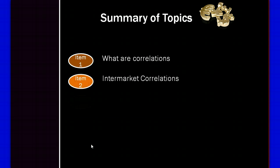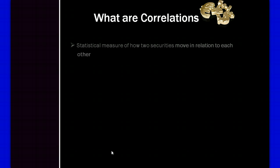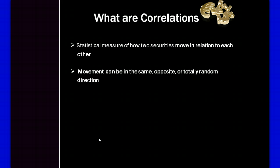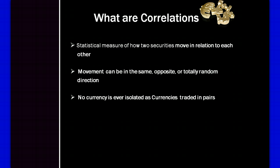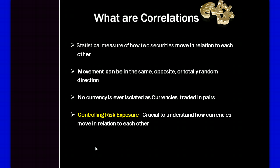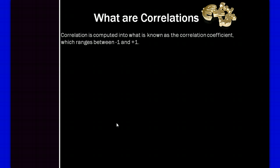What are correlations? Essentially, they are a statistical measure of how two securities move in relation to each other. The movement can be in the same, opposite, or totally random direction. If you trade currencies, you'll know they are traded in pairs, so you need to understand the underlying movement of each currency — for instance, both the euro and the US dollar — to get the overall movement. Understanding correlations is very important to control your risk exposure.